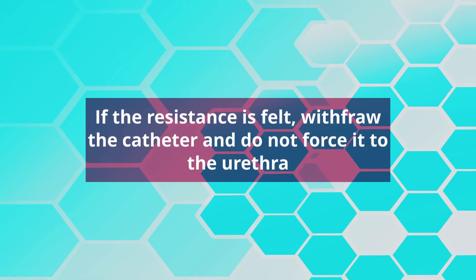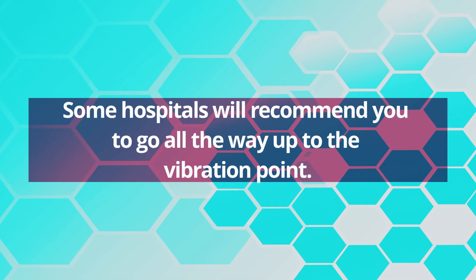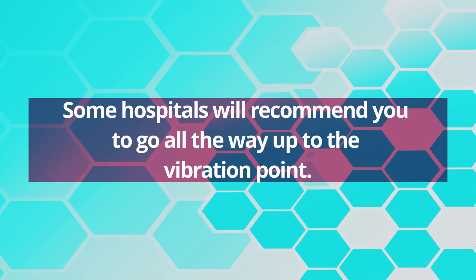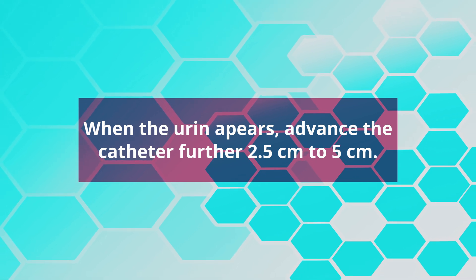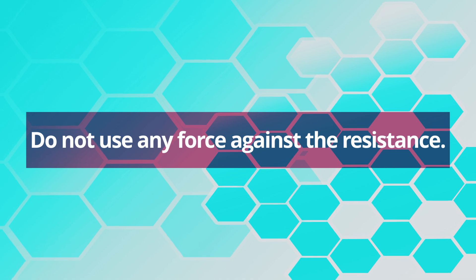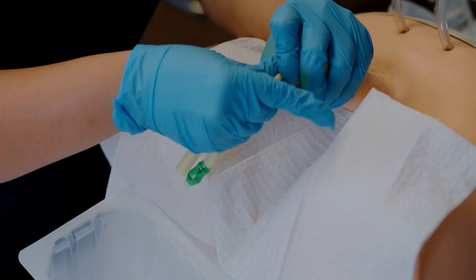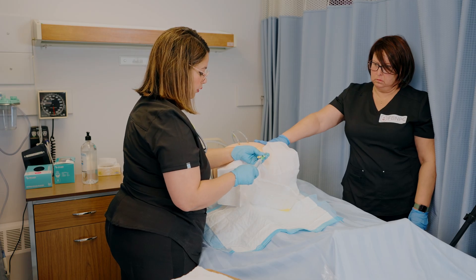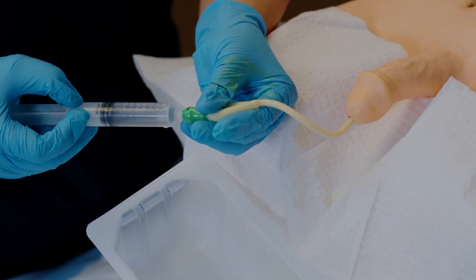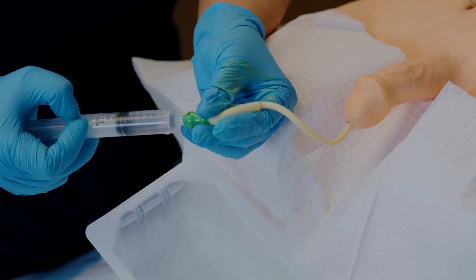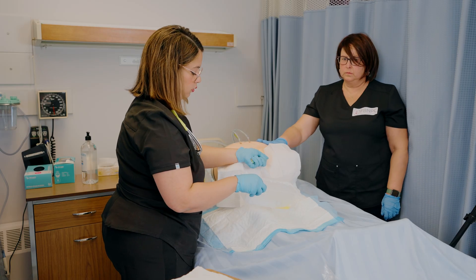If resistance is felt, withdraw the catheter and do not force it through the urethra. Some hospitals will recommend advancing all the way to the bifurcation point. When urine appears, advance the catheter a further 2.5 to 5 centimeters. Do not use any force against resistance. Lower the penis and hold the catheter securely with the non-dominant hand. Place the end of the catheter in the urine tray and inflate the balloon if an indwelling catheter is being used. Make sure to reposition the foreskin — if you don't, the condition paraphimosis can occur, which is a urological emergency.